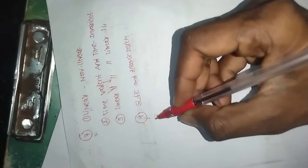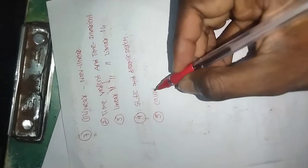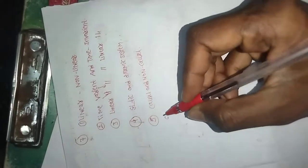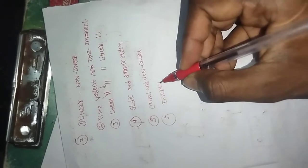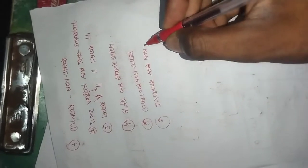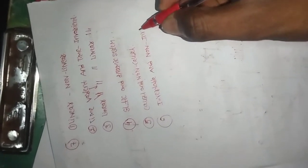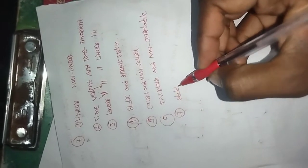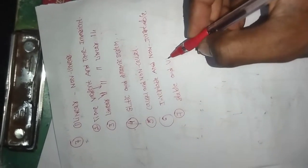Fifth is causal and non-causal. Sixth is invertible and non-invertible systems. Seventh and last is stable and unstable systems.